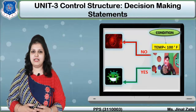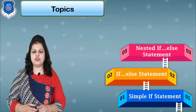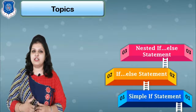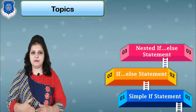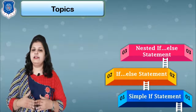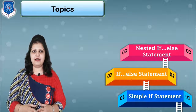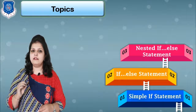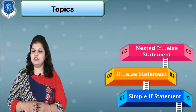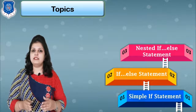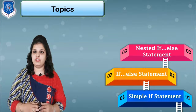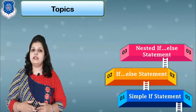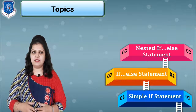In the previous video we had already started our third module, that is control structure. In this control structure we have to learn a total of five different types of conditional statements, or decision making statements. We have already learned our first three conditional statements: simple if statement, if-else statement, and nested if-else statement. Simple if and if-else are used for a single condition, whereas nested if-else, else-if ladder, and switch are mainly used for multiple conditions. In the previous video we had already seen nested if-else statement.